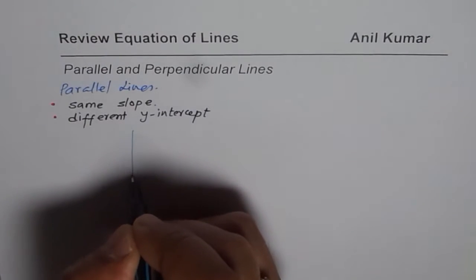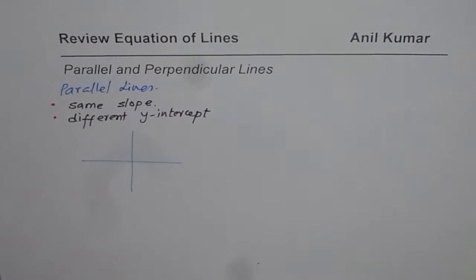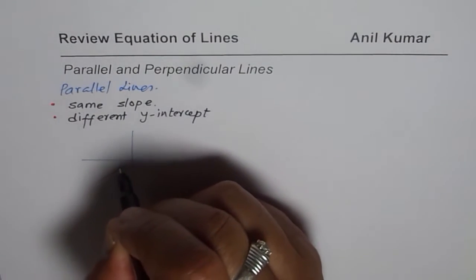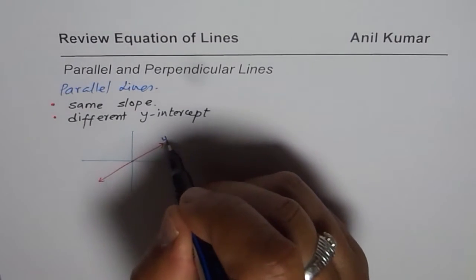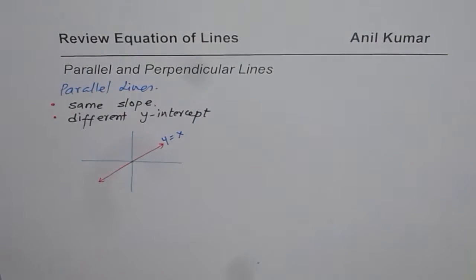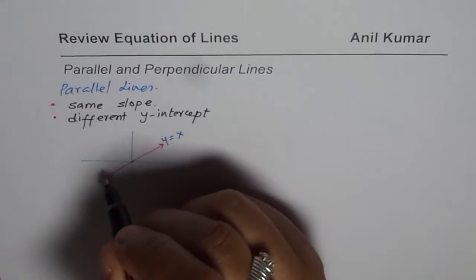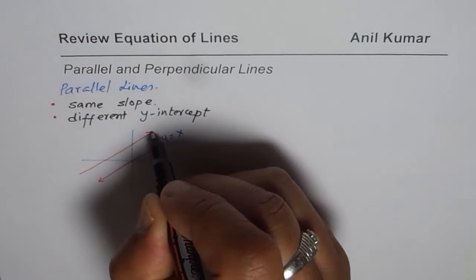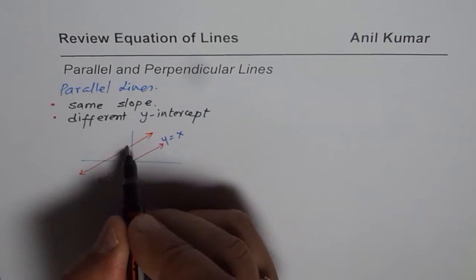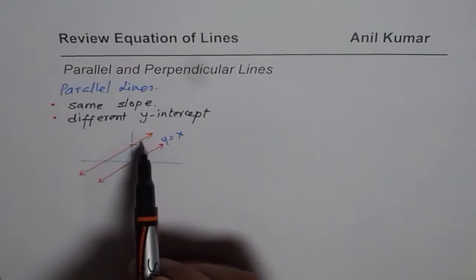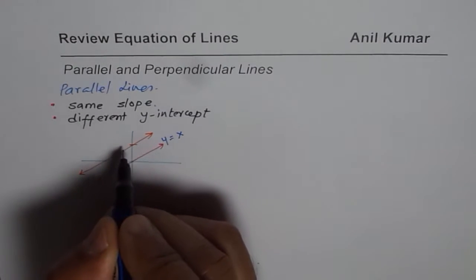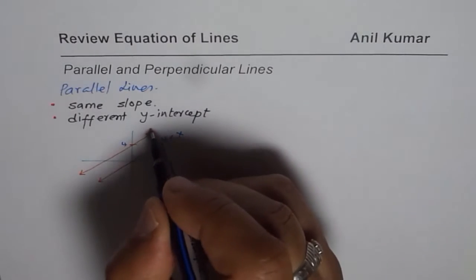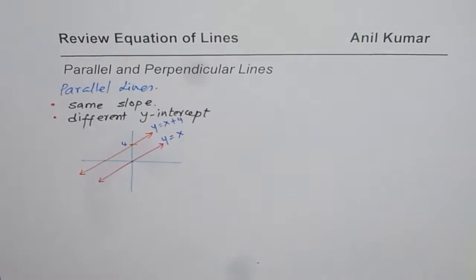Let us sketch two lines which are parallel. Let's say we have a line going through the origin, and this line is y equals to x. A line which is parallel to this should have the same slope, which is 1. We can write the equation of that parallel line as y equals to x plus the y-intercept. Let's say the y-intercept is 4, so the equation is y equals to x plus 4.